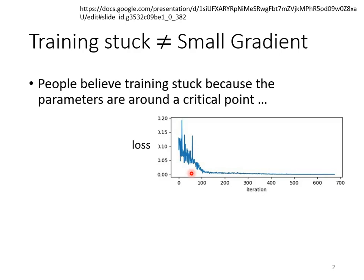But why did I say that the critical point may not be the biggest obstacle during training? Usually when training a network, you record its loss. The loss is large at first, and as you keep updating parameters — using the horizontal axis to represent the number of updates — the loss becomes smaller and smaller until it is stuck at some point. Stuck means your loss no longer reduces.